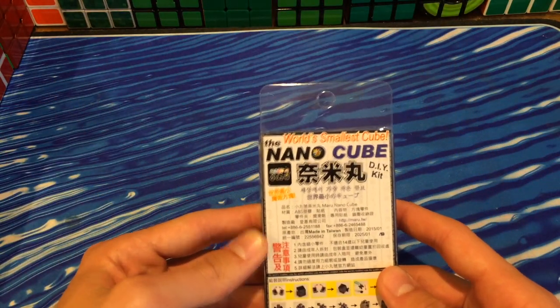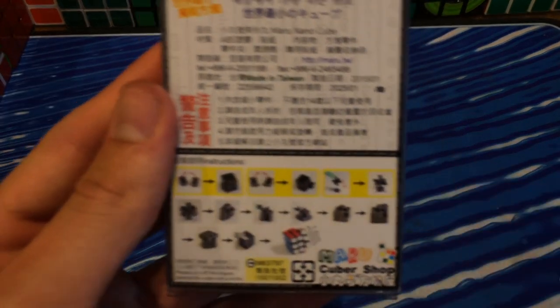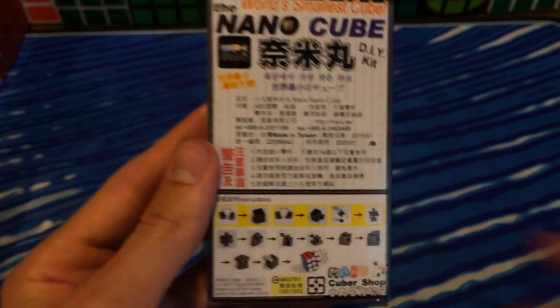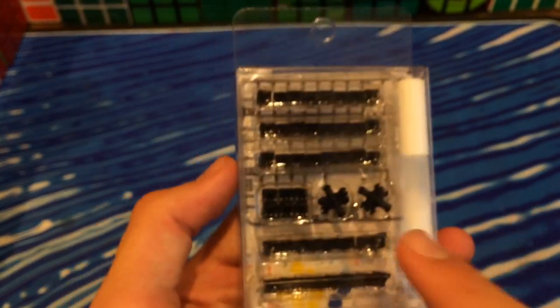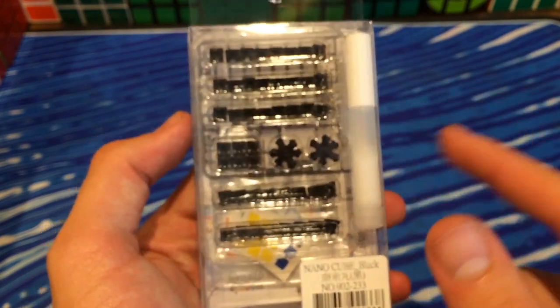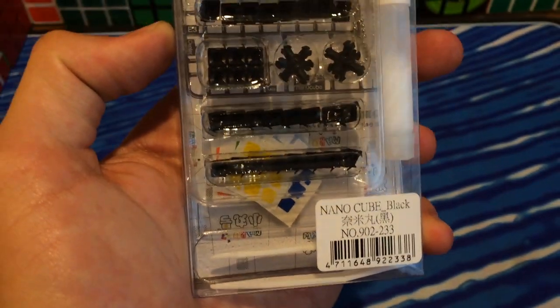This is the world's smallest mass-produced cube, the NanoCube. It's a DIY kit, so you put everything together and it comes with some cool stuff. It comes with all the pieces - you put the edges and corners together. It includes two cores, Maru lube, all the center caps, stickers, as well as little tweezers to put it together.